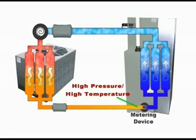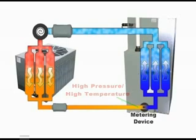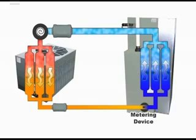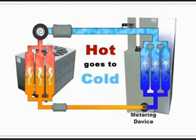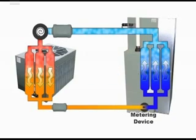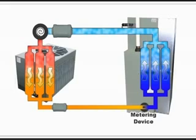A high pressure, high temperature condition transfers heat, but in the wrong direction. At this point in the system it would be expelling heat instead of receiving it. Remember: hot goes to cold. We want the refrigerant to be cold and capable of accepting heat as it enters the next device in the refrigerant system loop.